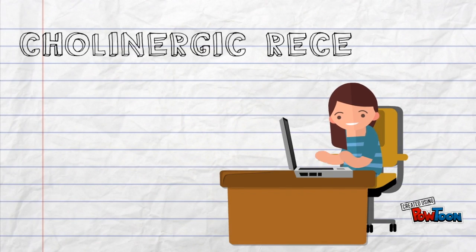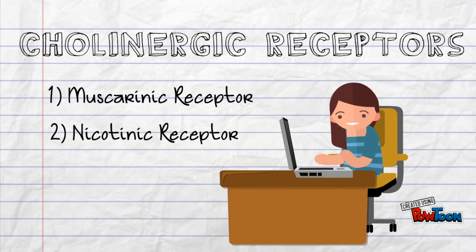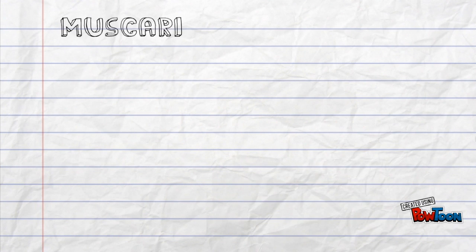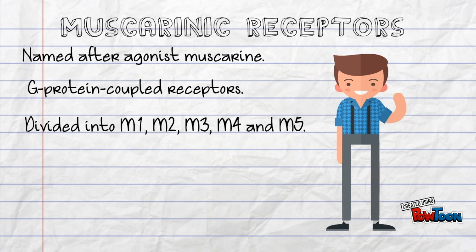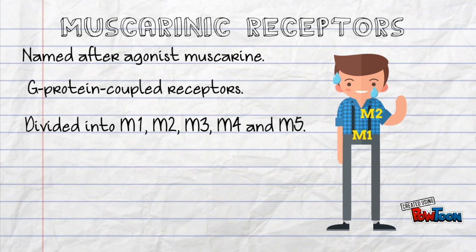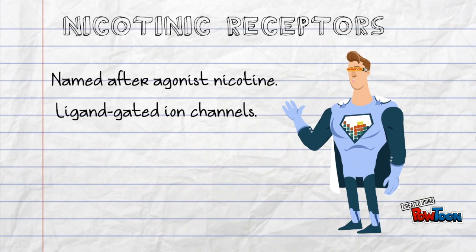Cholinergic receptors are divided into two: muscarinic receptors and nicotinic receptors. Muscarinic receptors are named after their agonist muscarine. They are G protein-coupled receptors and are divided into five subtypes. M1 is found in the stomach, M2 is found in the heart, and M3 is found in the sweat glands and tear ducts. Nicotinic receptors are named after their agonist nicotine and are ligand-gated ion channels.